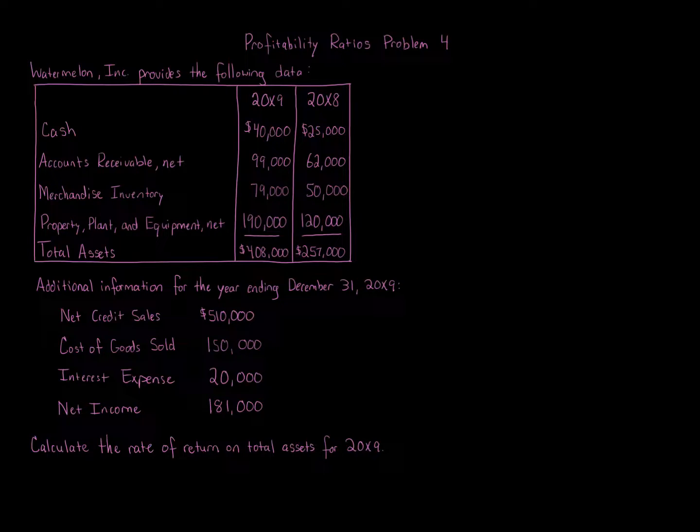Additional Information for the Year Ending December 31st, 20x9: Net Credit Sales $510,000, Cost of Goods Sold $150,000, Interest Expense $20,000, Net Income $181,000. Calculate the Rate of Return on Total Assets for 20x9.